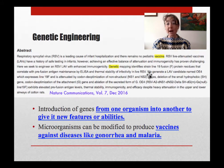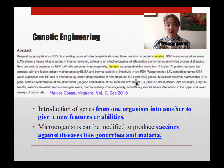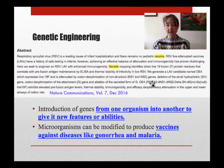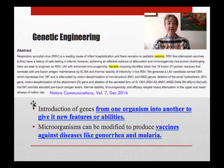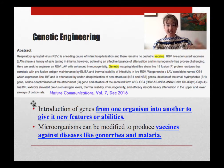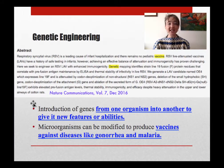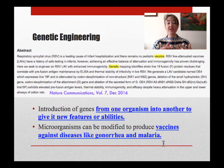They generated a vaccine candidate named OE4 which expresses line 19F and is attenuated — meaning it doesn't cause disease — by codon deoptimization and non-structural genes. They did this by deletion of a small hydrophobic gene, which allowed them to both attenuate and enhance immune function, or immunogenicity. This whole abstract is all about making vaccines using genetic engineering. Here it's for RSV, but this has been done for many other diseases as well. So genetic engineering has a lot of potential, a lot of applications, and a lot of discussion surrounding it.